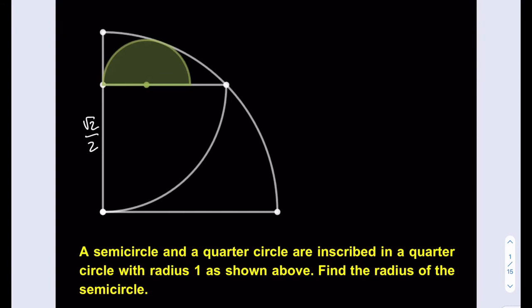I'm going to connect the center of the quarter circle to the center of the semicircle. Let's call this radius r, what we're trying to find, the radius of the semicircle.